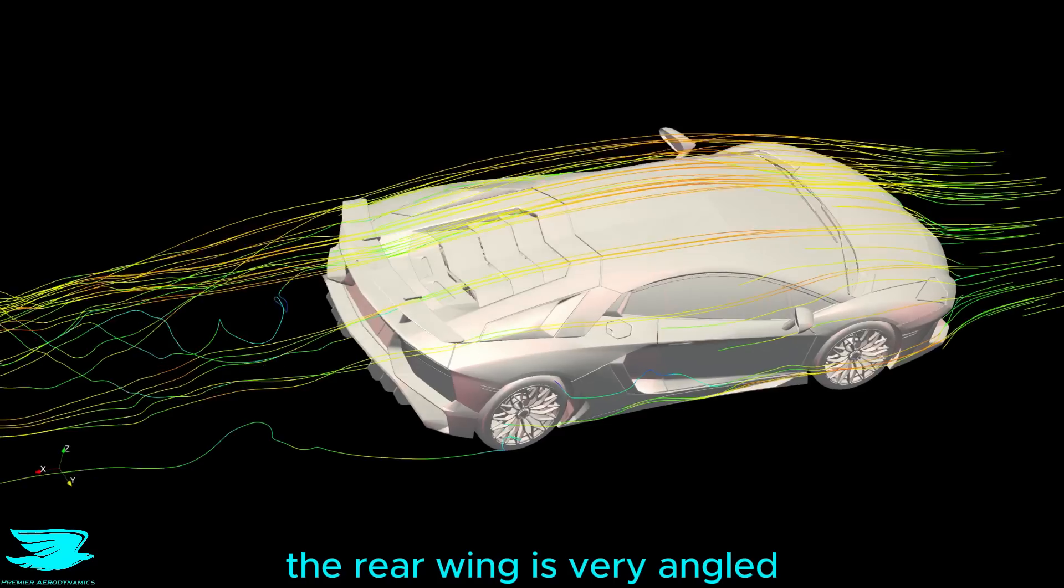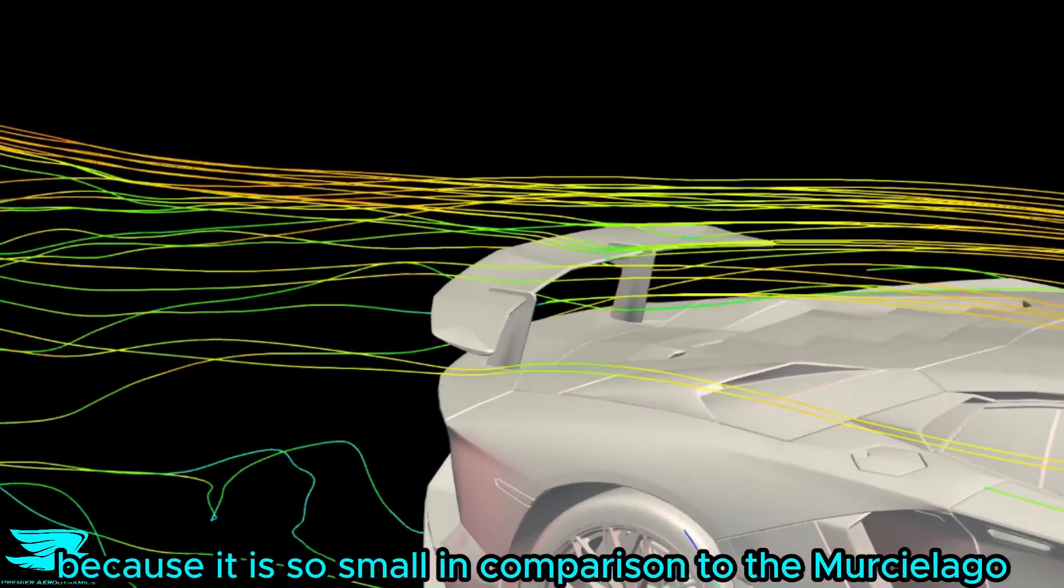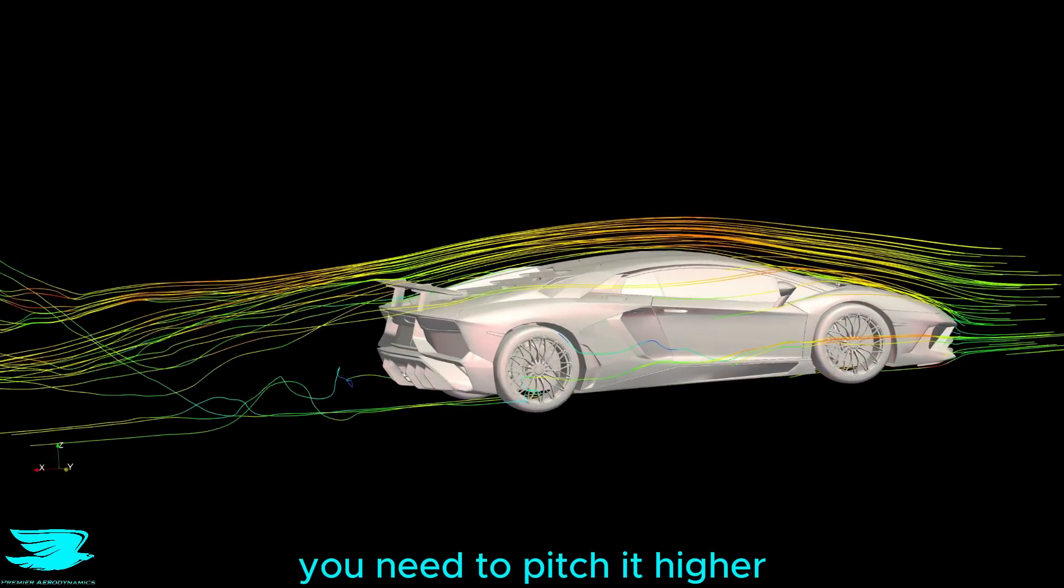The rear wing is very angled, which helps kick the streamlines out, but it is likely running at such a high angle because it is so small in comparison to the Murciélago. So to produce good downforce, you need to pitch it higher.